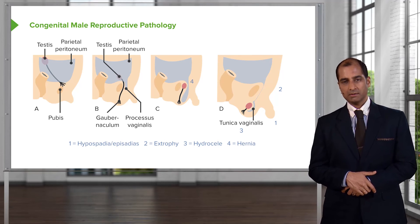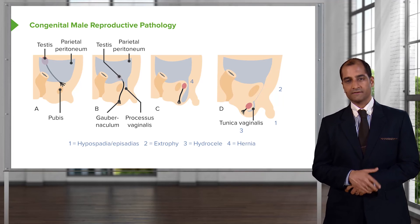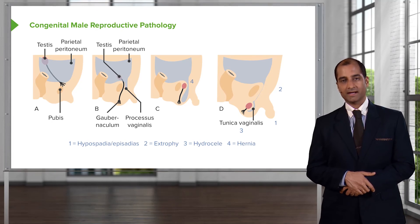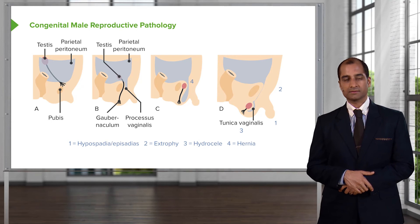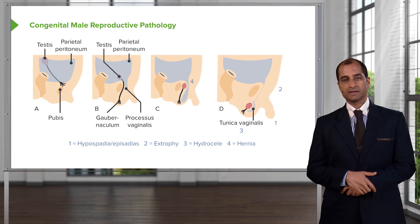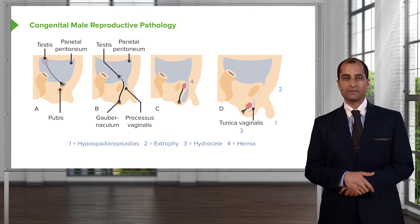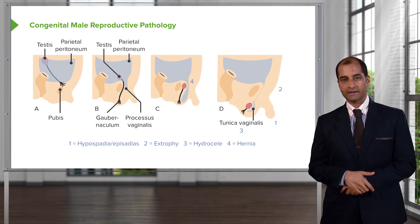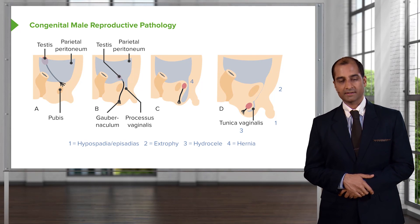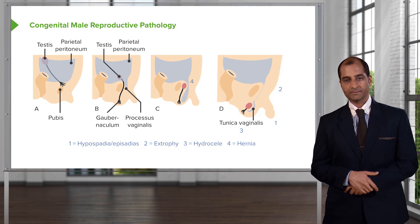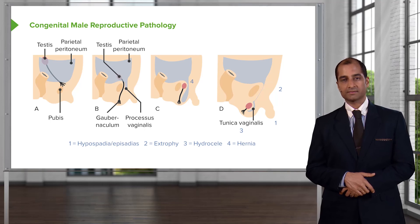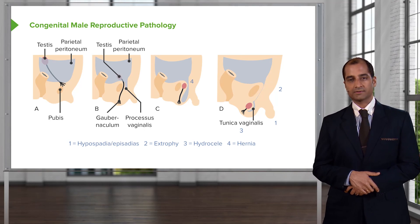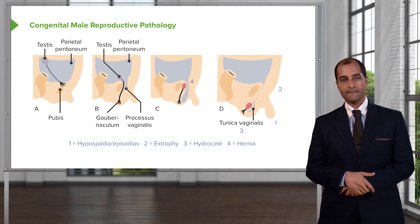Hydrocele involves accumulation of fluid in the cavity, and we'll compare hydrocele to varicocele later — varicocele playing more of a role in pathology, but hydrocele equally important. Number four represents hernia, referring to either omphalocele or gastroschisis. That's a quick overview of embryology and some of the associated pathologies. Let's keep moving.